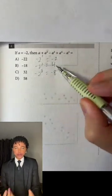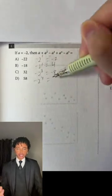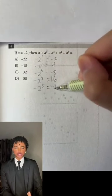So then negative 2 raised to the fourth power is going to equal positive 16, and then negative 2 raised to the fifth power is going to equal negative 32.